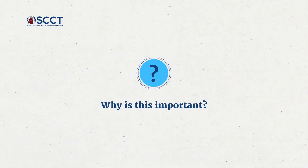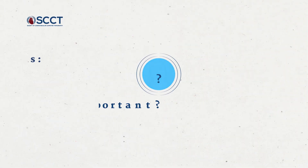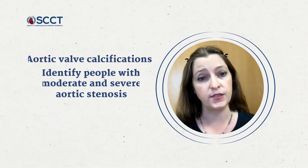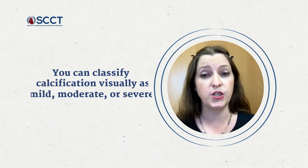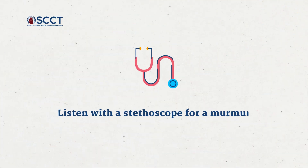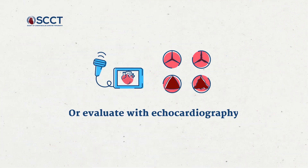Why is this important? Well, aortic valve calcifications can identify patients with moderate and severe aortic stenosis. You don't need to measure the aortic valve calcification, but on both contrast-enhanced and non-contrast CT you can classify the calcification visually as mild, moderate, or severe. If the referring provider or patient don't already know about it, further assessment for potential aortic stenosis is simple — they can listen with a stethoscope for a murmur or evaluate with echocardiography.